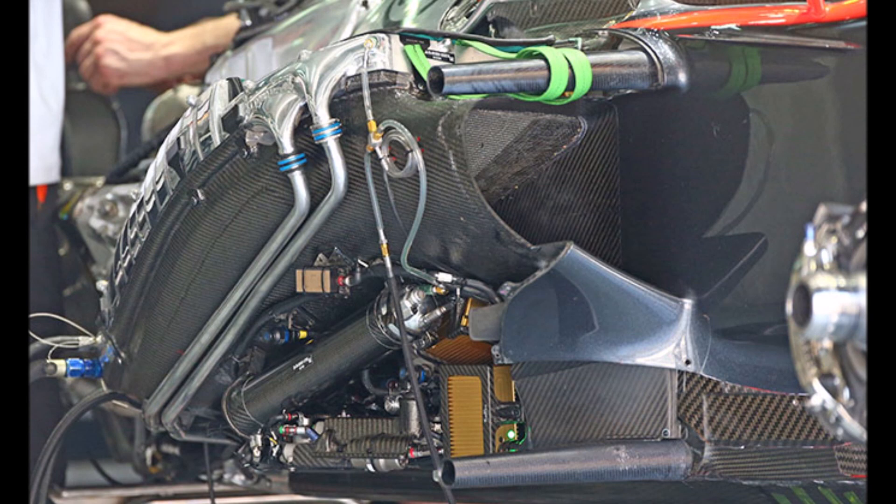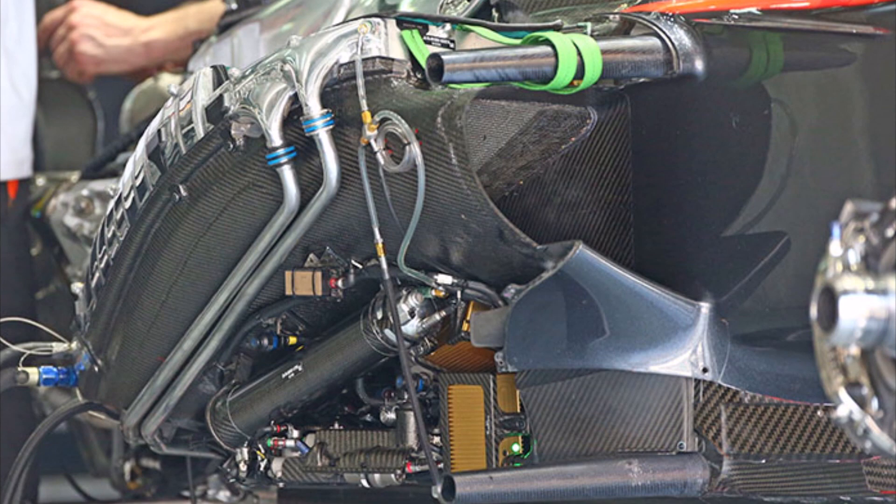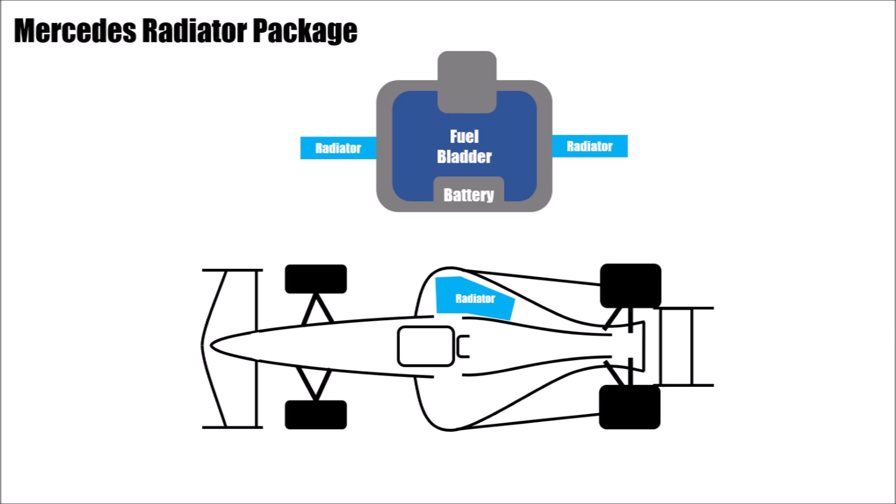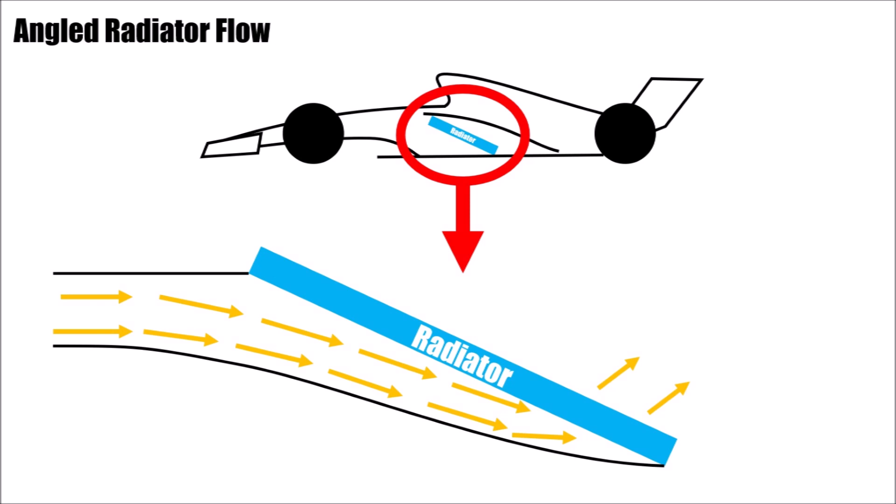So since flow velocities through the radiators are pretty low, extreme directional changes to the airflow were actually not a big problem anymore. And so Mercedes started to push the radiators into their monocoque. They did this every year a little bit more and today they ended up with a monocoque that has an X shape if you see it from the back.